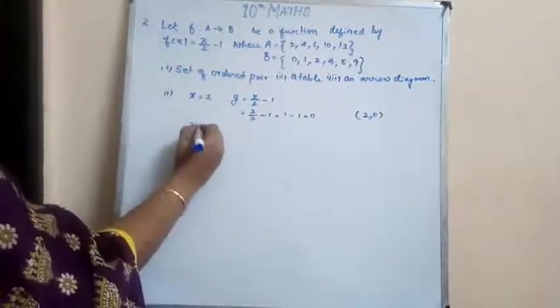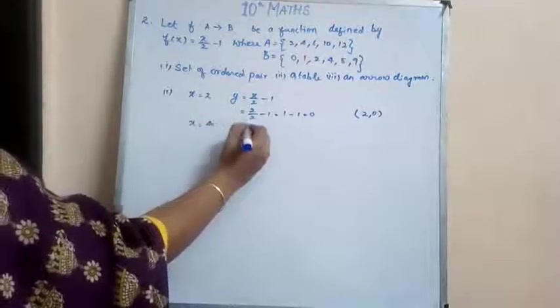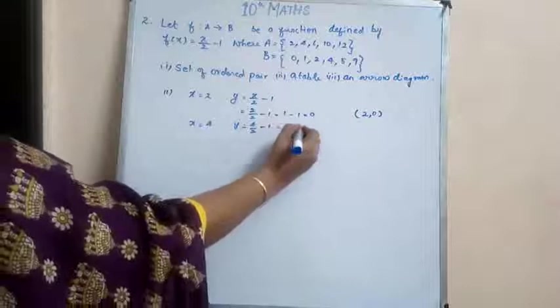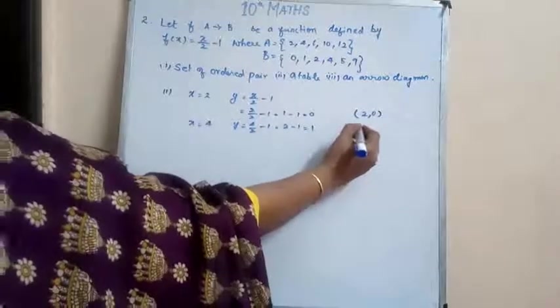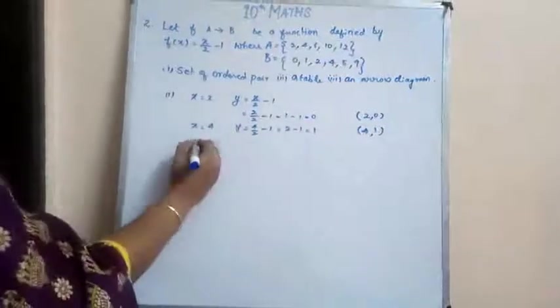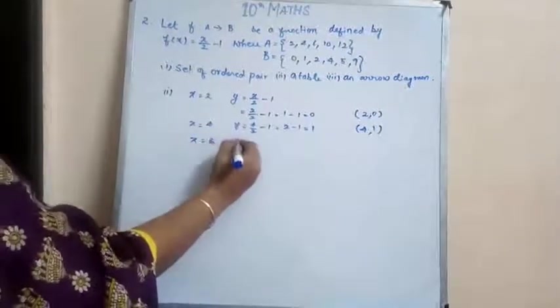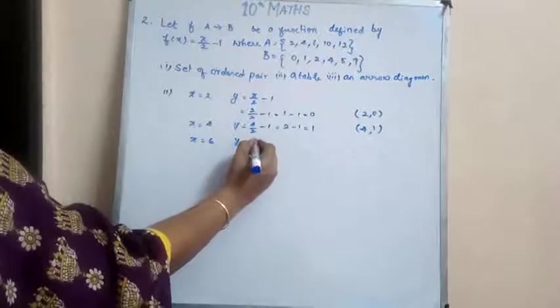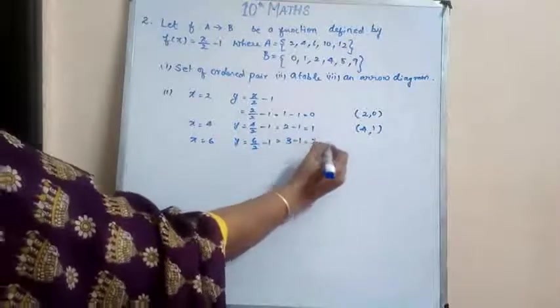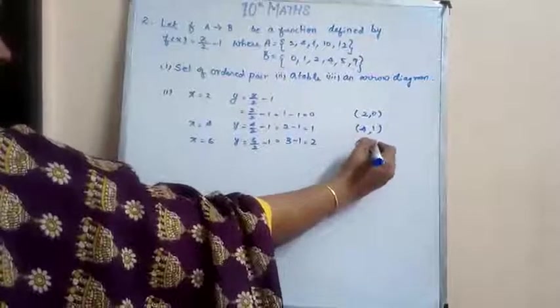So for x = 4, y = 4/2 - 1, so 2 - 1, which is equal to 1. So the corresponding ordered pair is (4, 1). So when x = 6, y = 6/2 - 1, so 3 - 1, which is equal to 2. So (6, 2).